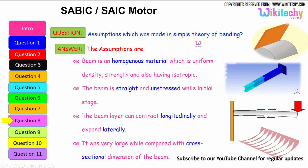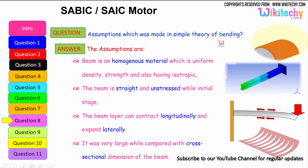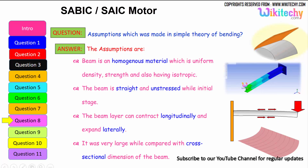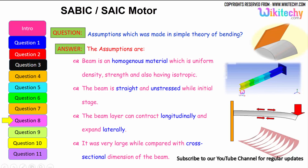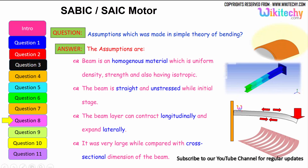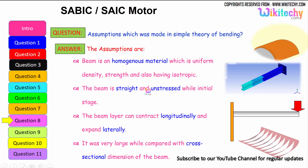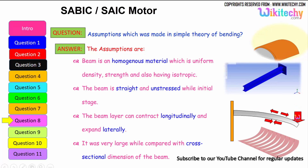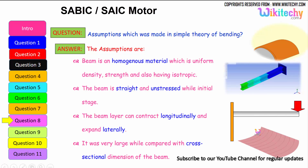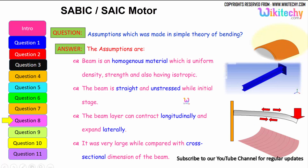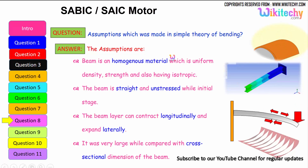What are the assumptions made in the simple theory of bending? The beam is a homogeneous material with uniform density, strength, and is isotropic. The beam is straight and unstressed in its initial stage. The beam can contract longitudinally and expand laterally. The beam's length is very large when compared with the cross-sectional dimension of the beam. These are the assumptions for the theory of bending.